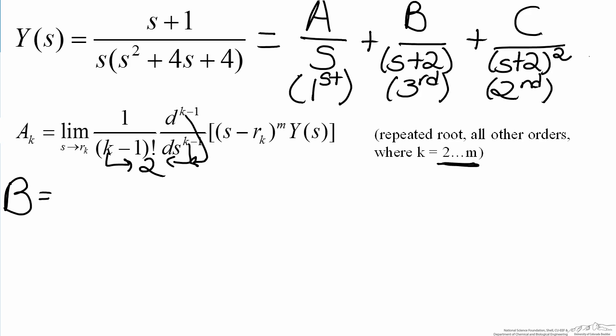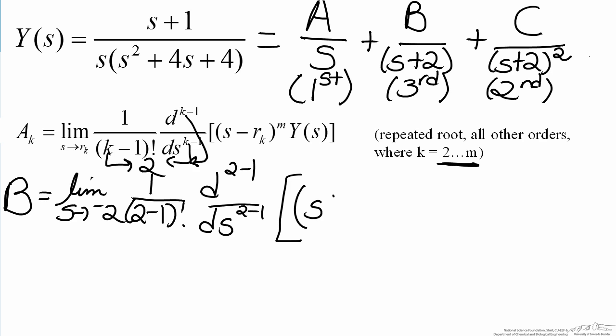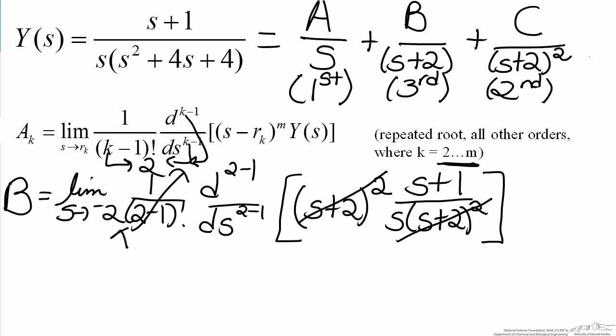So by taking all this information we can solve for B. So B will be the limit as s approaches negative 2 of 1 over 2 minus 1 factorial, multiplied by the derivative raised to the k minus 1 power, multiplied by s minus r sub k, which here is s plus 2, raised to the maximum order which we have, which is 2, multiplied by our Y of s. We can make some simplifications here, the s plus 2 squared terms cancel out, the 1 over 2 minus 1 factorial becomes 1, because it's 1 over 1 factorial, and the d to the 2 minus 1, ds to the 2 minus 1 becomes the first derivative.